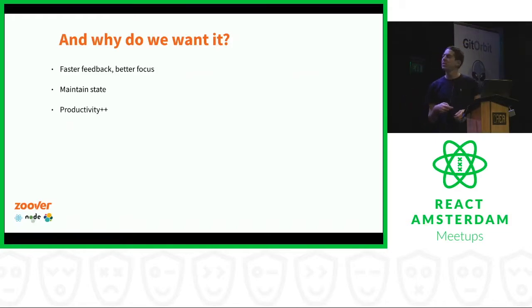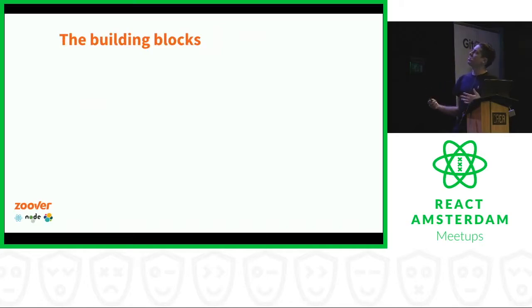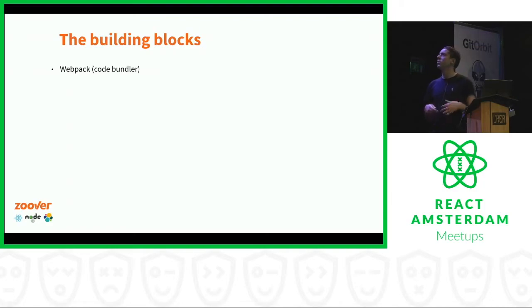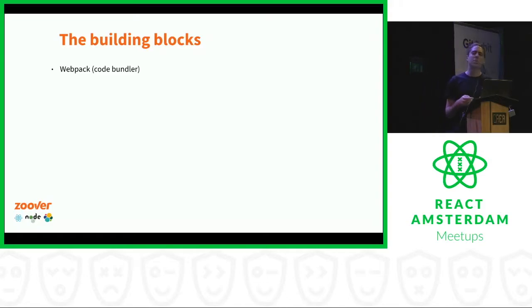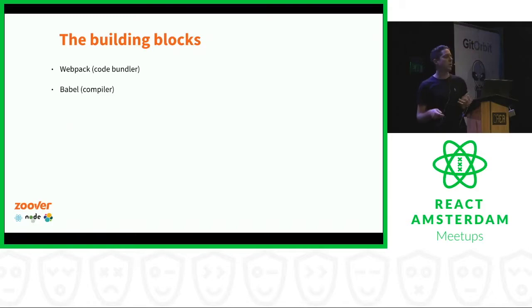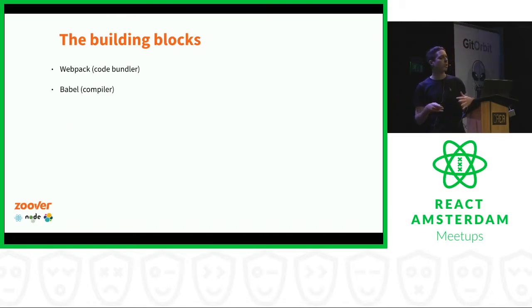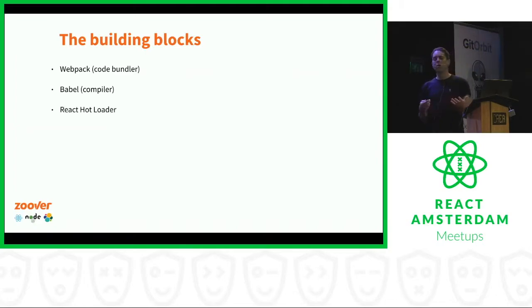As for the building blocks for getting hot reloading to work in React: one of the things is Webpack, which is a code bundler that most of us use and definitely most of us complain about. Then we have Babel, which is a JavaScript compiler mostly used for compiling newer features of JavaScript into a subset supported by older browsers. And we also have React Hot Loader, which is the library itself.